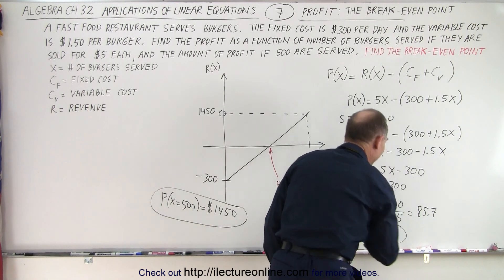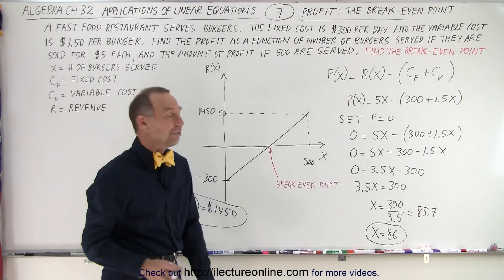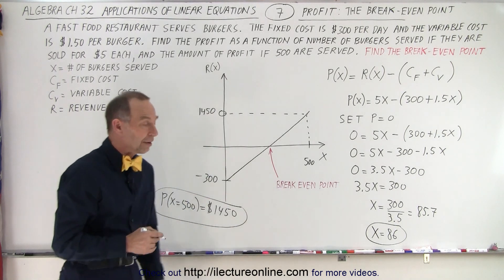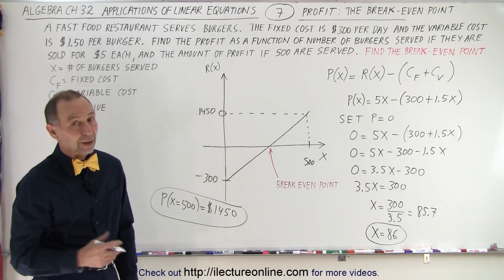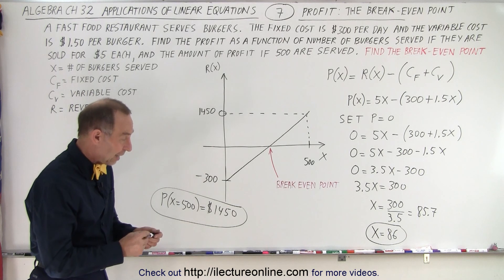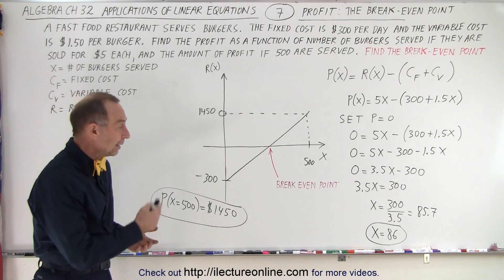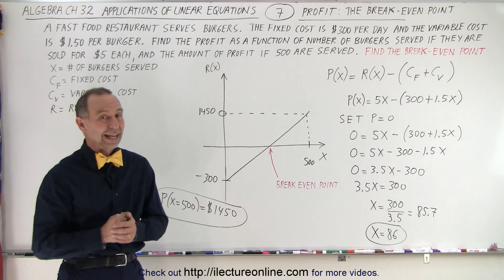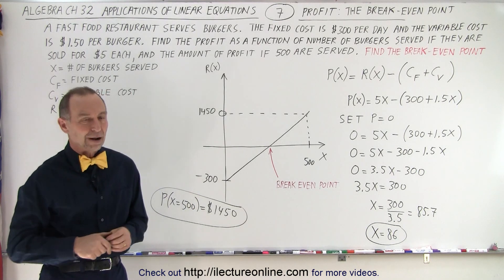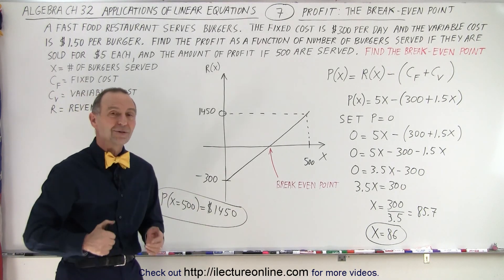We must sell at least 86 burgers to break even and so we can start making a profit. If we make 85 burgers we actually still lose money, and so the break-even point is obtained by serving 86 burgers. Anything beyond that we start making a profit, and that is how it's done.